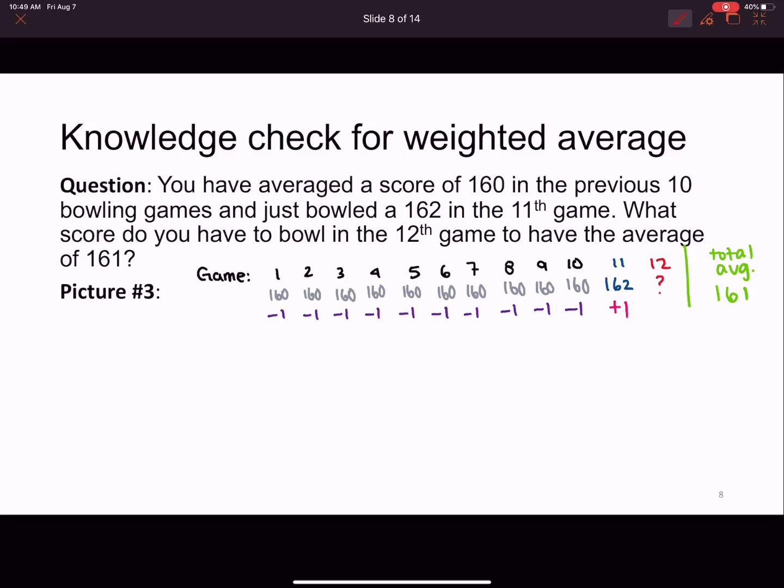And then what I'm going to do is I'm going to add up all these numbers. There's 10 negative ones and one positive one, so it's a negative nine. And so what needs to happen is for the 12, I need this number, this negative nine, I need it to end up being zero. If it's zero, that means I got to 161. So for the 12th game, I'm going to need to, in order for this to be zero, I need this 12 to be a positive nine here, to cancel out with this negative nine.